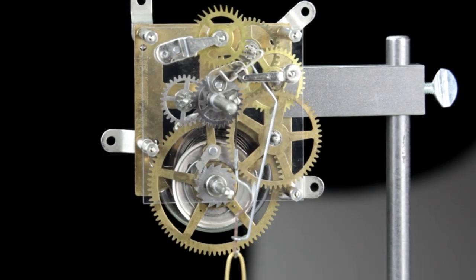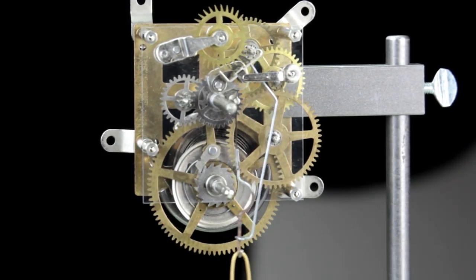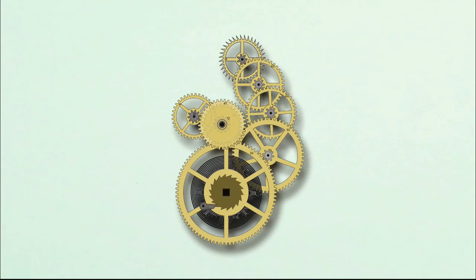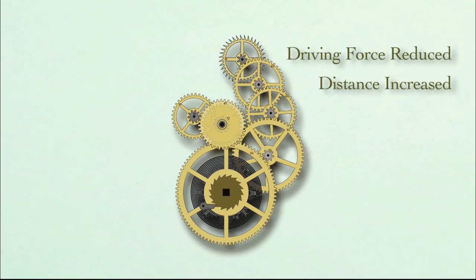We start with a large power source in the great wheel and transfer it to the pinion of the second wheel, from the second wheel to the pinion of the third wheel and so forth. Each time we do this, the driving force or torque is reduced, but the rotational distance traveled in each stage is increased.